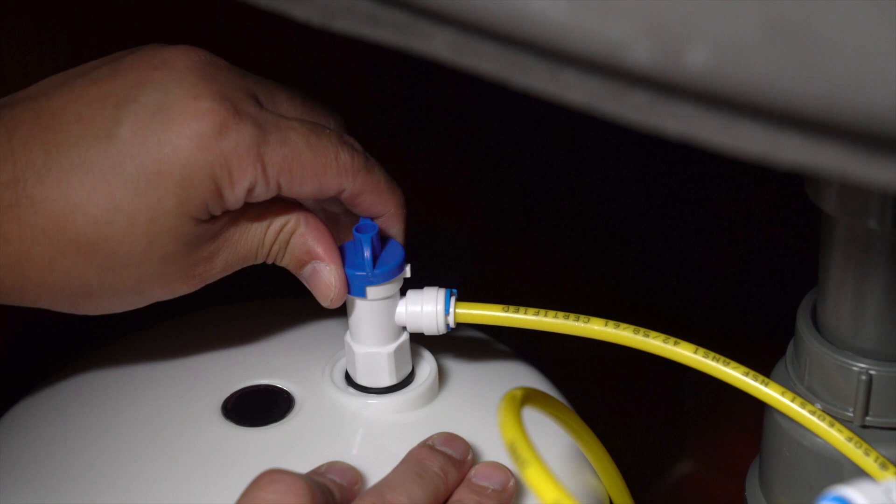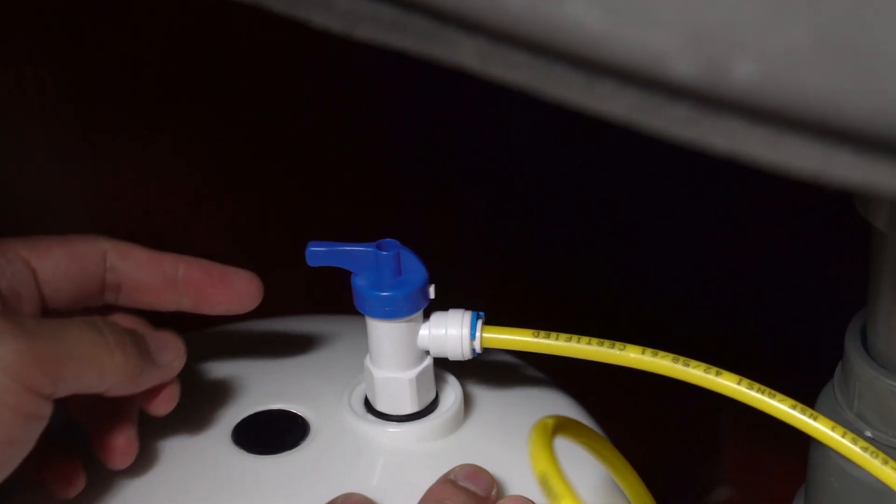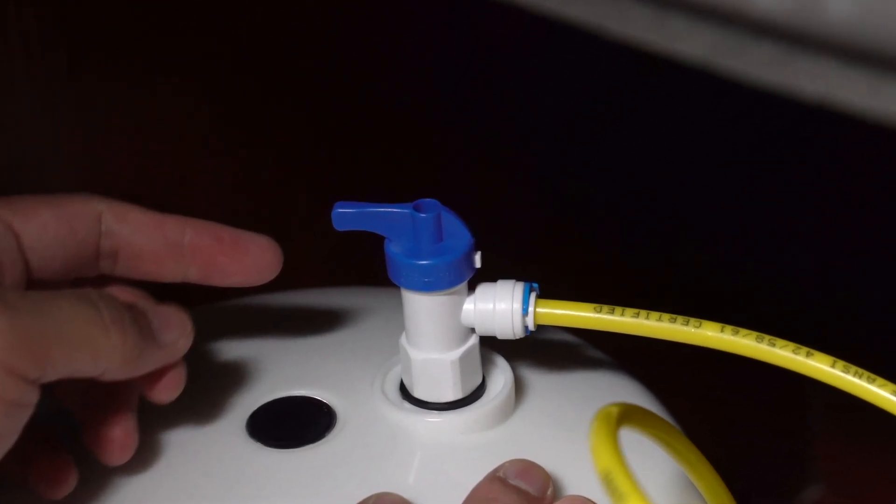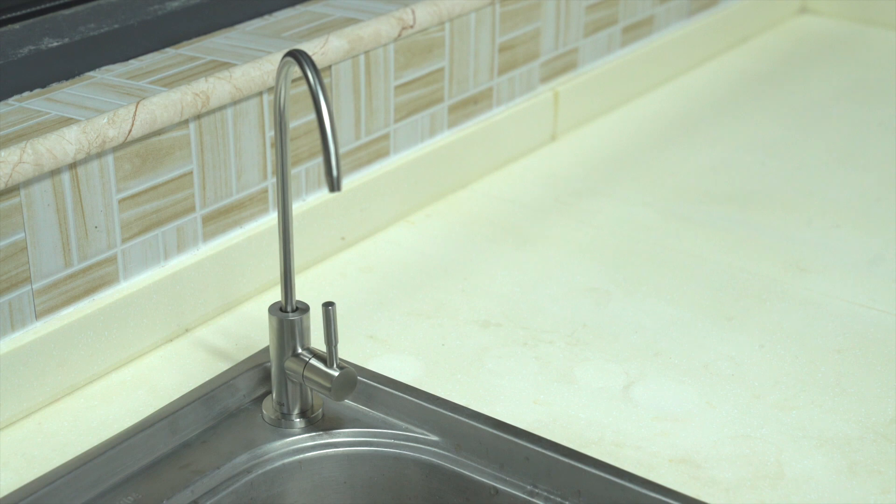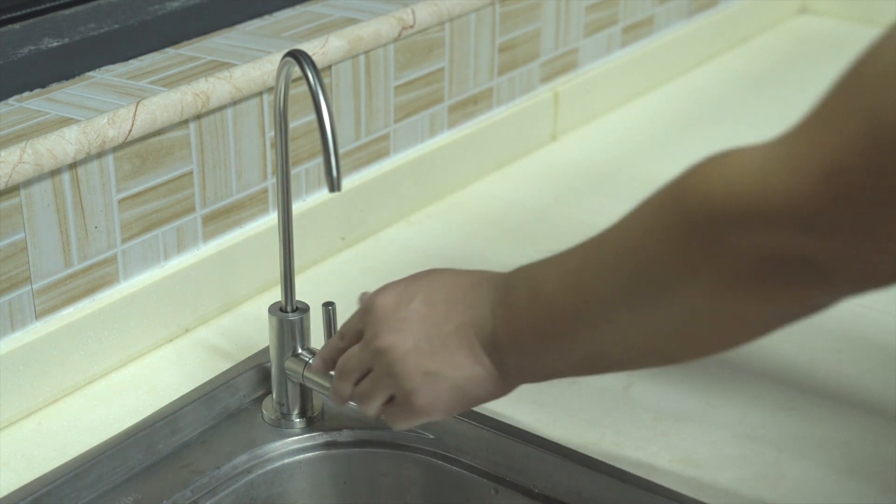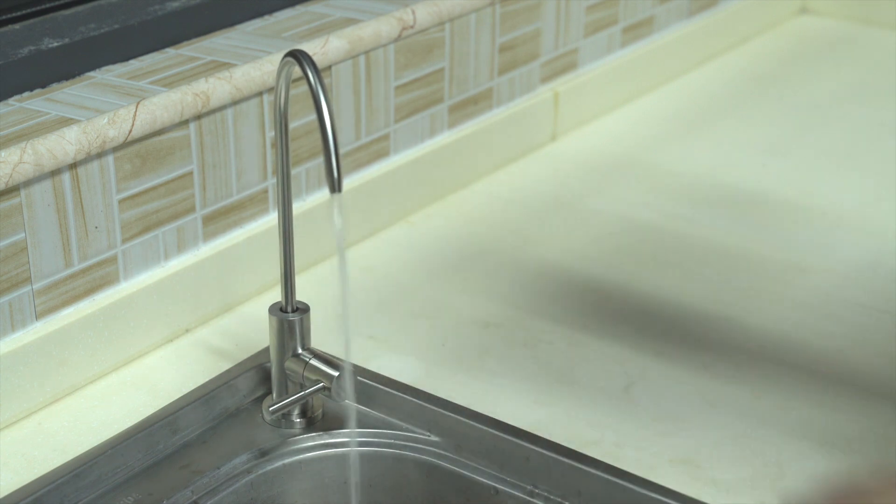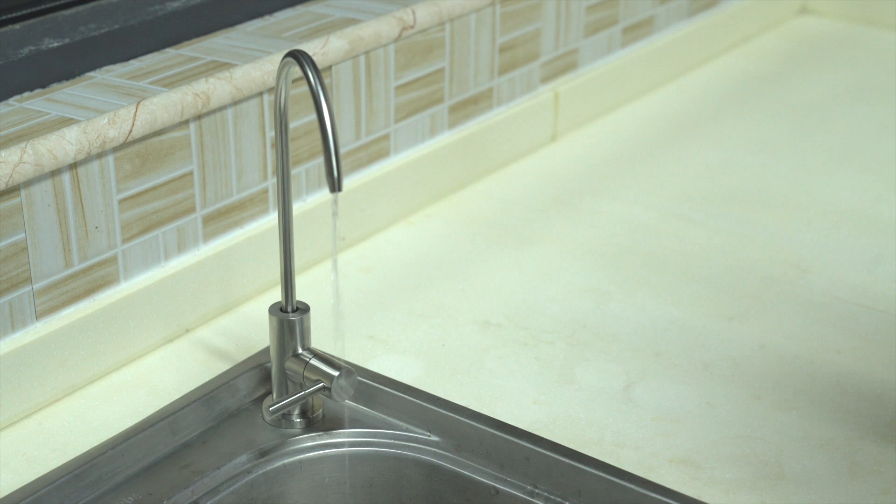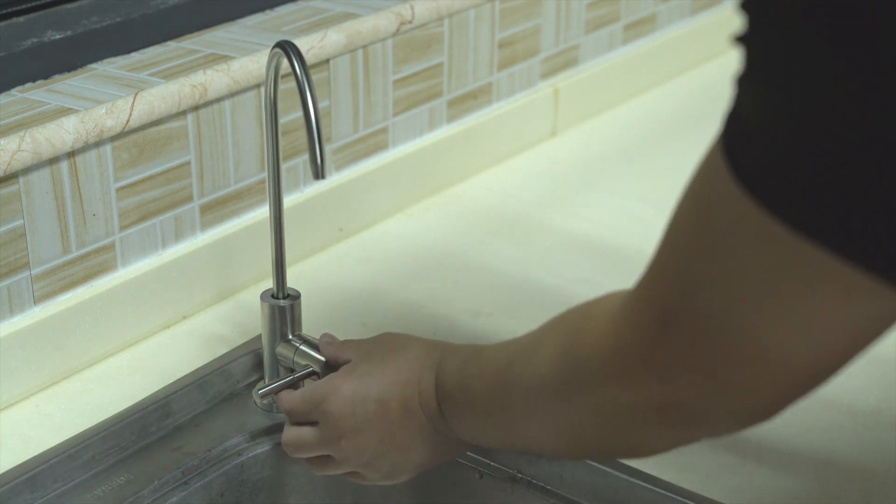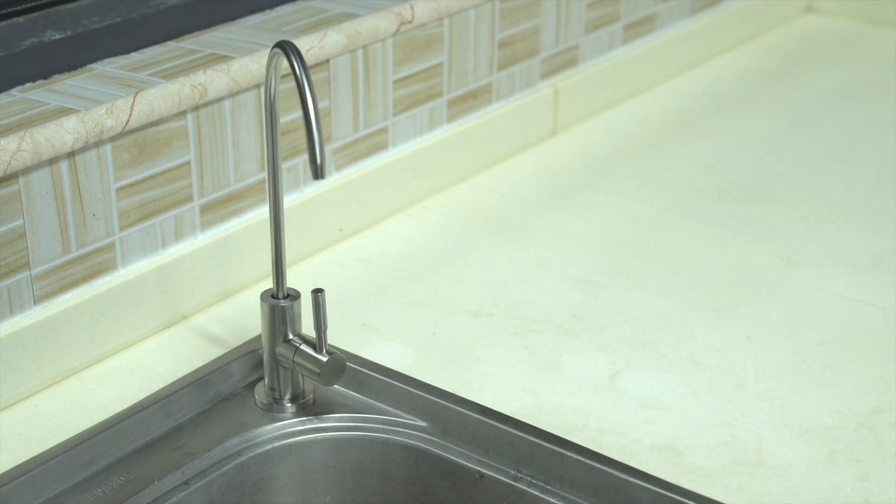Open the ball valve on top of the pressure tank. Open the sink faucet and allow the water from the pressure tank to drain. After a few minutes, the water from the faucet will get noticeably less. Now close the sink faucet, and allow the pressure tank to refill again for at least two hours.